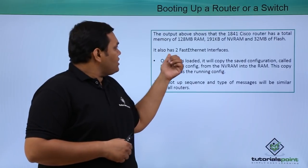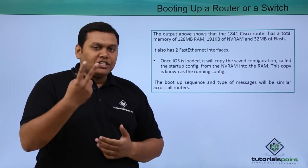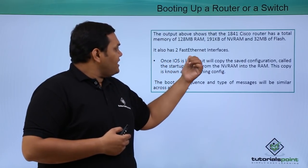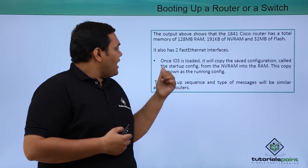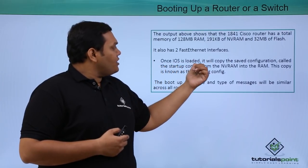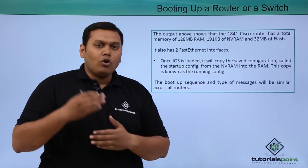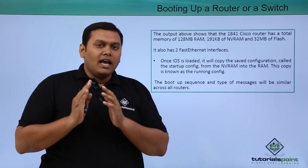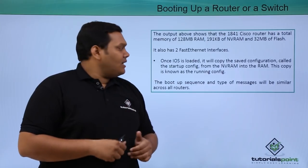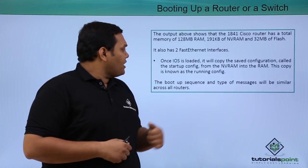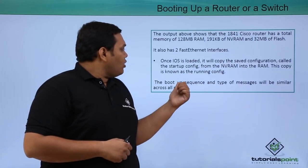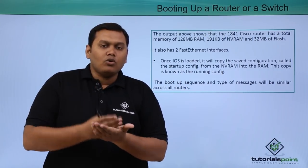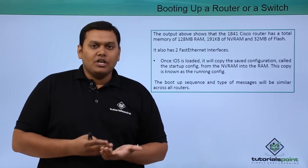The 1841 router has two Fast Ethernet interfaces. Once the IOS is loaded, it copies the saved configuration, which is called the running configuration. The boot-up sequence and type of messages is very similar between routers and switches.